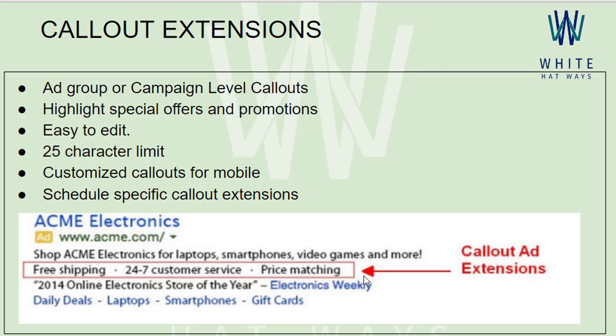The fifth point is customized callouts for mobile. You can create different, customized callouts specifically for mobile phones — there is a provision for that. The sixth point is you can schedule specific callout extensions. You can define that these callout extensions should appear only in certain hours and not in others, setting a schedule so they appear only in those specific hours you have defined.